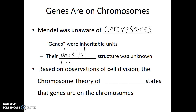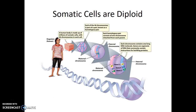Based on later observations of cell division and the rediscovery of Gregor Mendel's works by later scientists, those scientists developed what's called the chromosome theory of inheritance. This is the conclusion that these genes — these heritable units that Gregor Mendel was talking about — were found on chromosomes, those same chromosomes that we saw moving during cell division. We now know that genes are stretches of DNA along the length of a chromosome, and that there can be hundreds, even thousands of genes on a single eukaryotic chromosome.